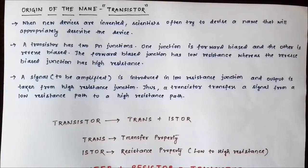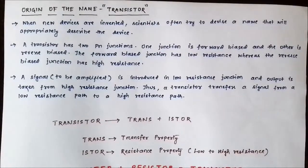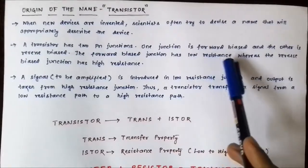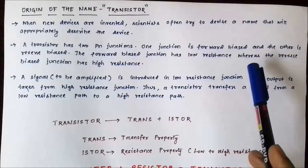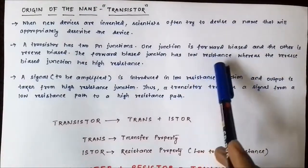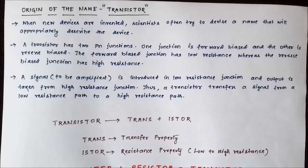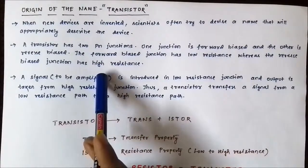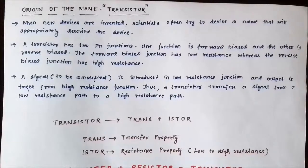A transistor has two PN junctions. The first is the emitter-base junction, which is the input junction, and the other is the collector-base junction, which is the output junction. The emitter-base junction is always forward biased, resulting in very low resistance, whereas the collector-base junction is reverse biased, resulting in very high resistance.